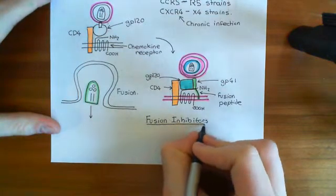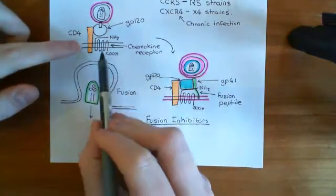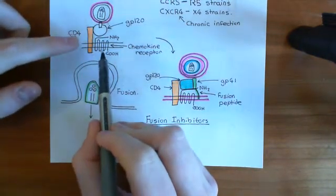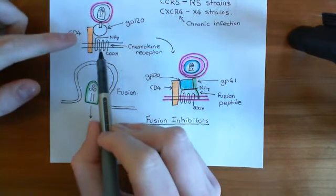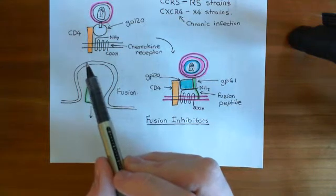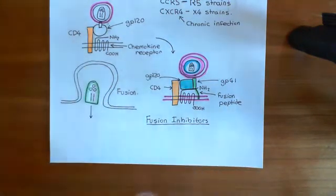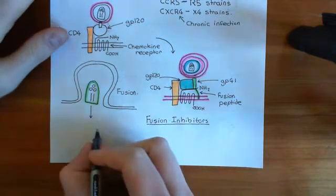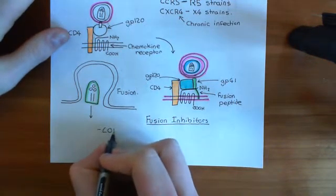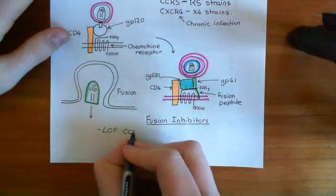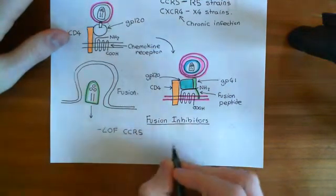The first fusion inhibitor I want to talk about is a drug called Maraviroc. Before discussing it, I want to give some motivation for its discovery. If you look in the white Caucasian population, there are some people who are resistant to HIV infection — even if they are exposed to the virus, they don't actually get infected. The reason turns out to be that they have loss-of-function (LOF) mutations in the CCR5 protein.